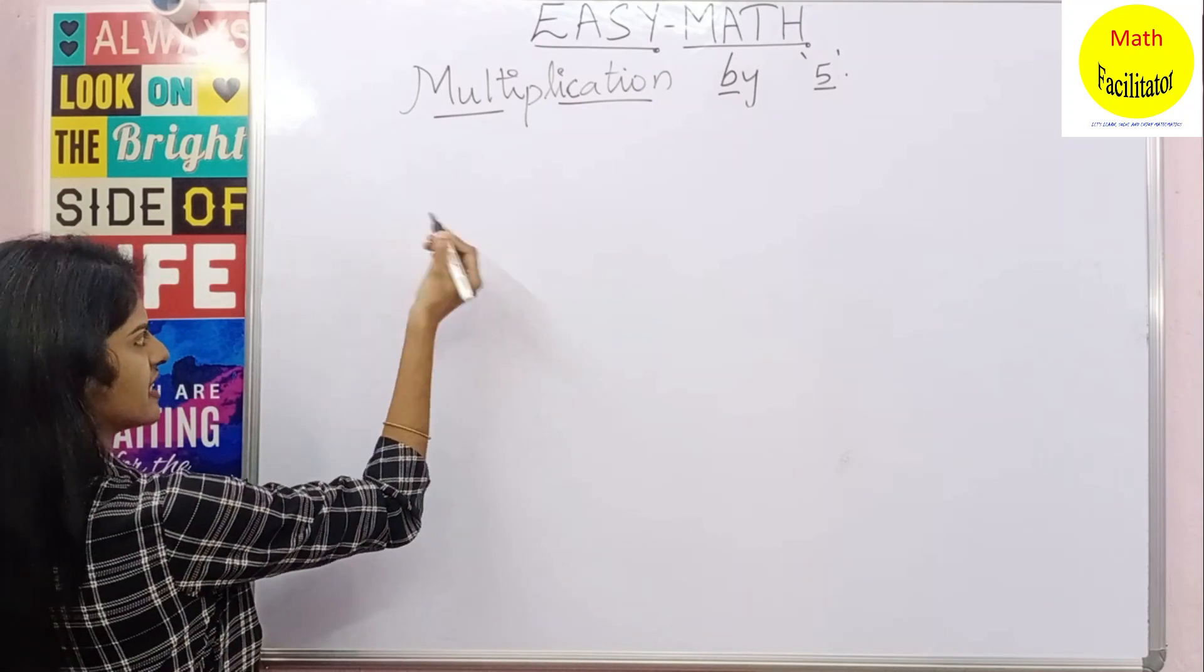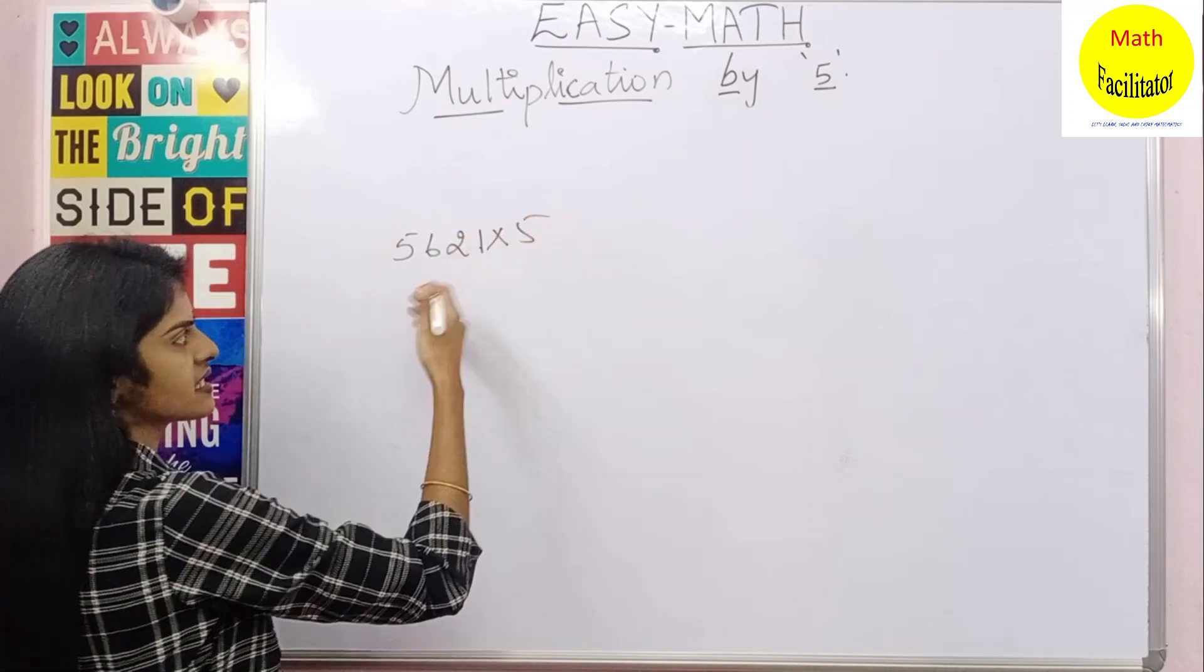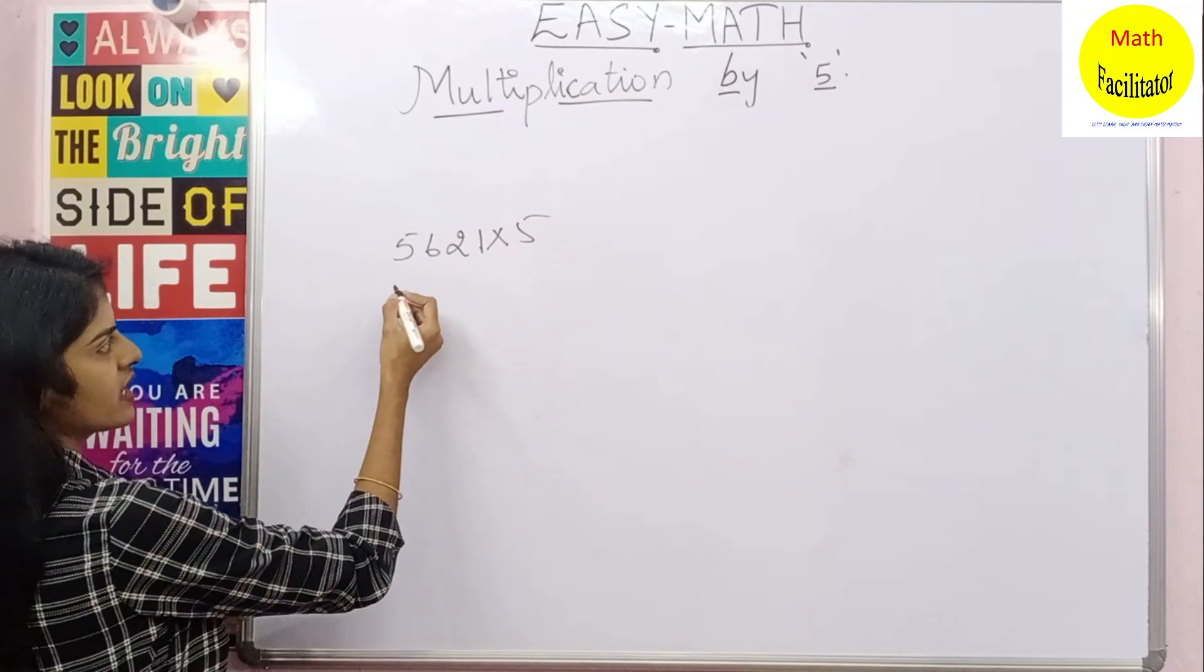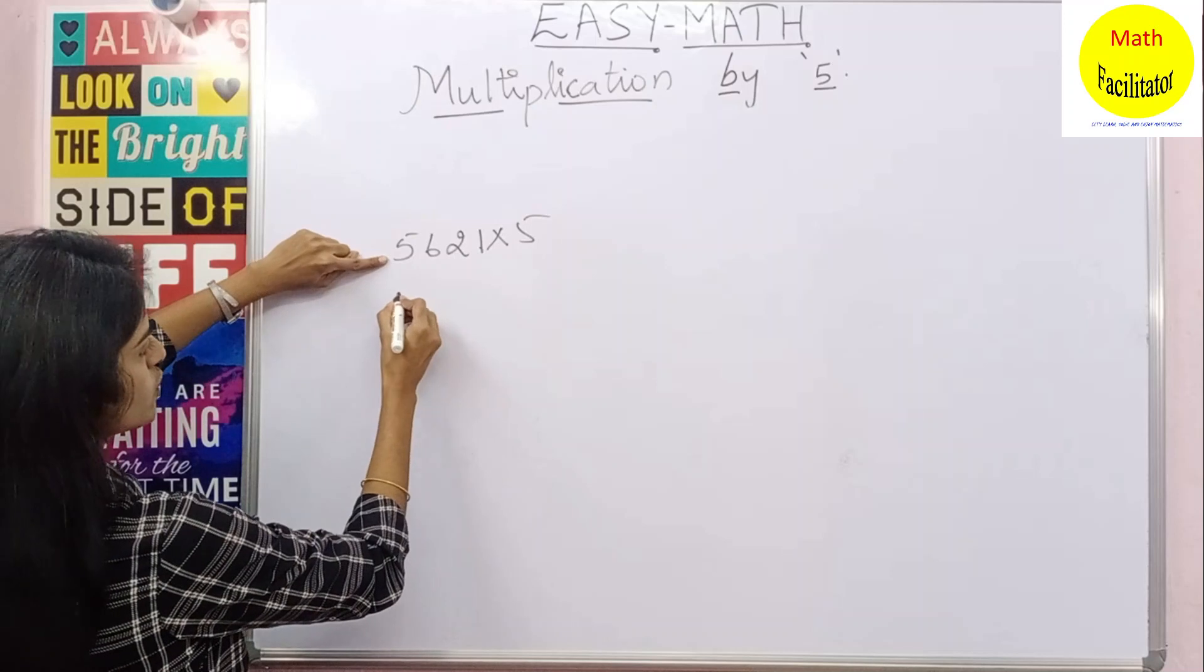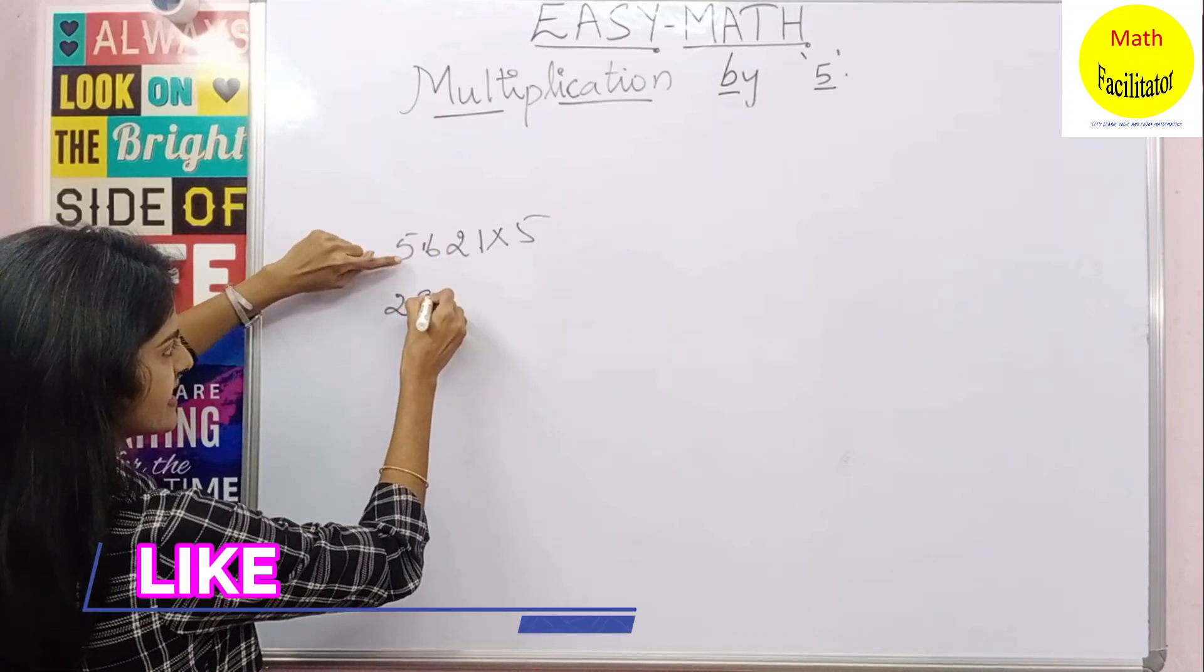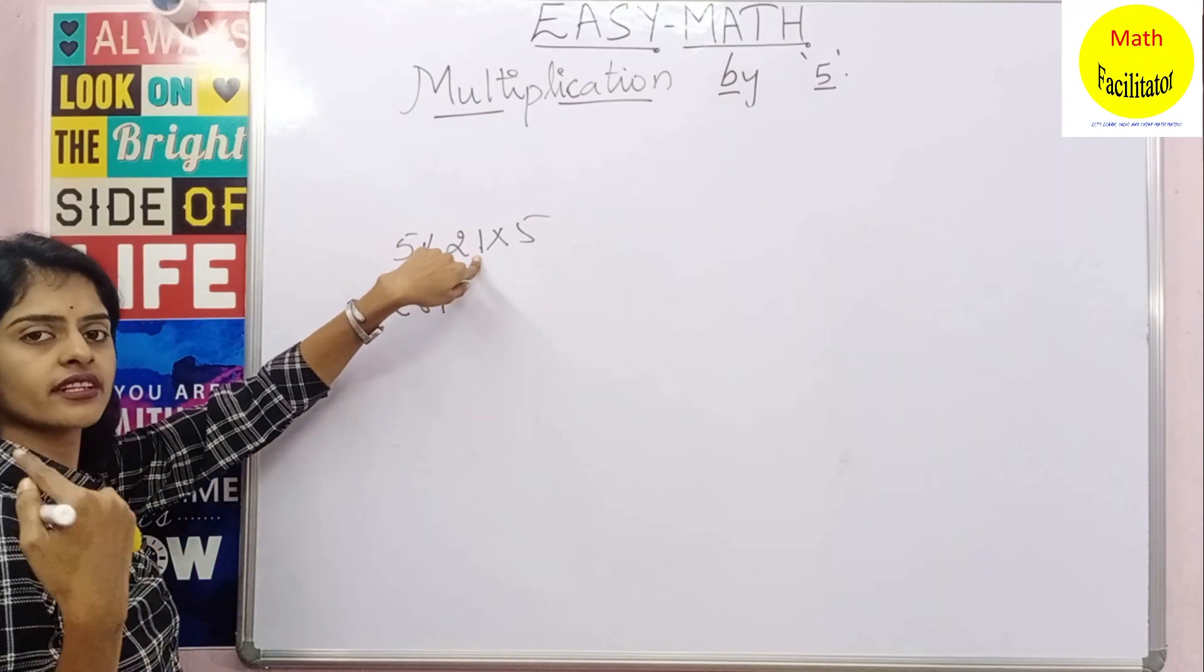We can also get odd numbers in our calculations. For example, 5621 into 5. Suppose this is the question. So how do you do it now? Dividing it by 2, let us do it. So 2 times 2 is 4 and you left out with 1, 2 times 8 is 16, 2 times 1 is 2.